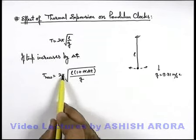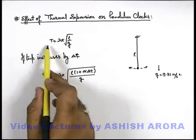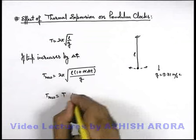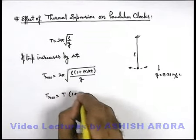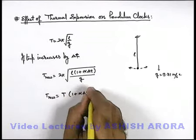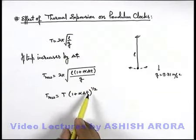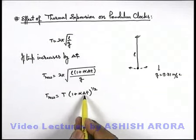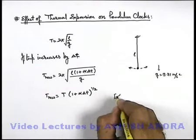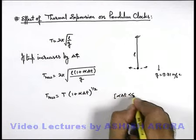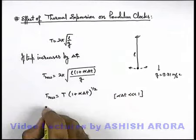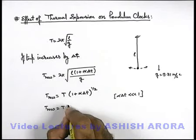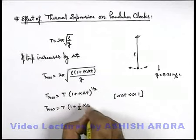In this situation, 2π√(l/g) can be taken as the initial time period T. So the new time period can be written as T multiplied by (1 + αΔT)^(1/2). Since for metals α is very small, αΔT is also very small — much less than 1. So we can apply the binomial approximation: T_new ≈ T × (1 + ½αΔT).